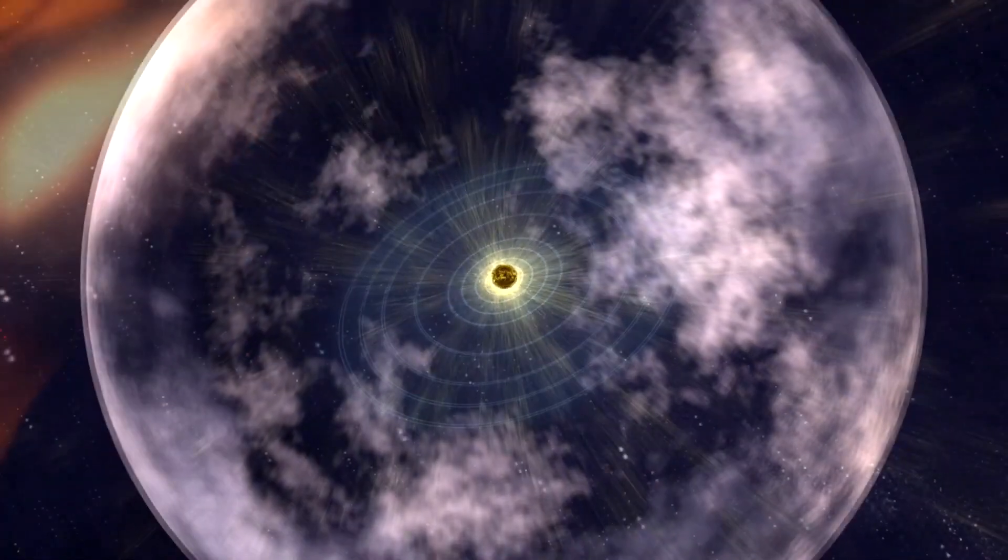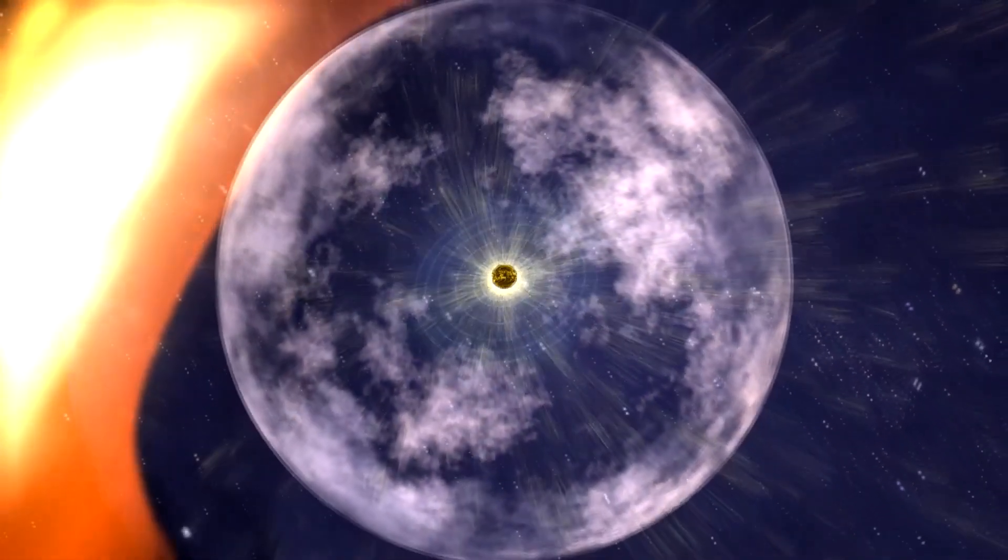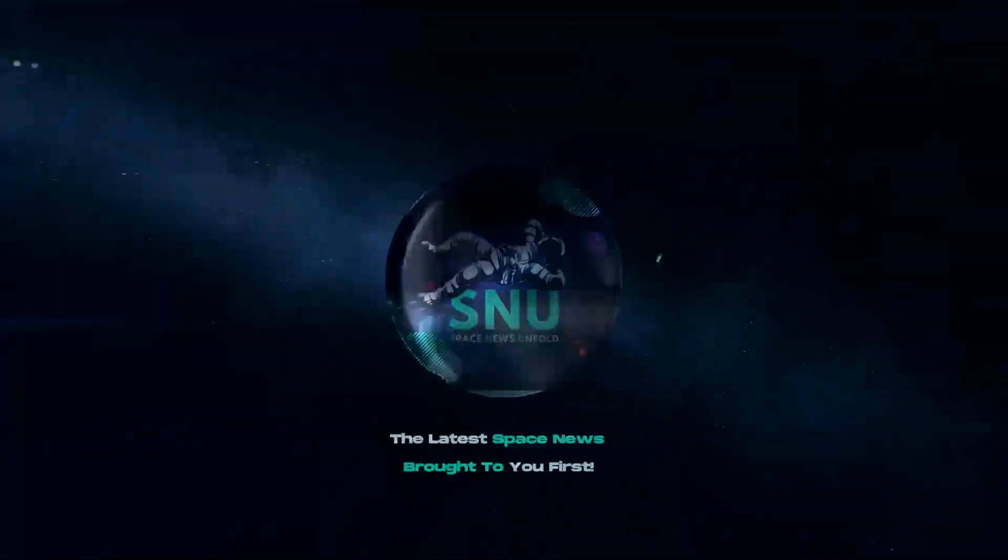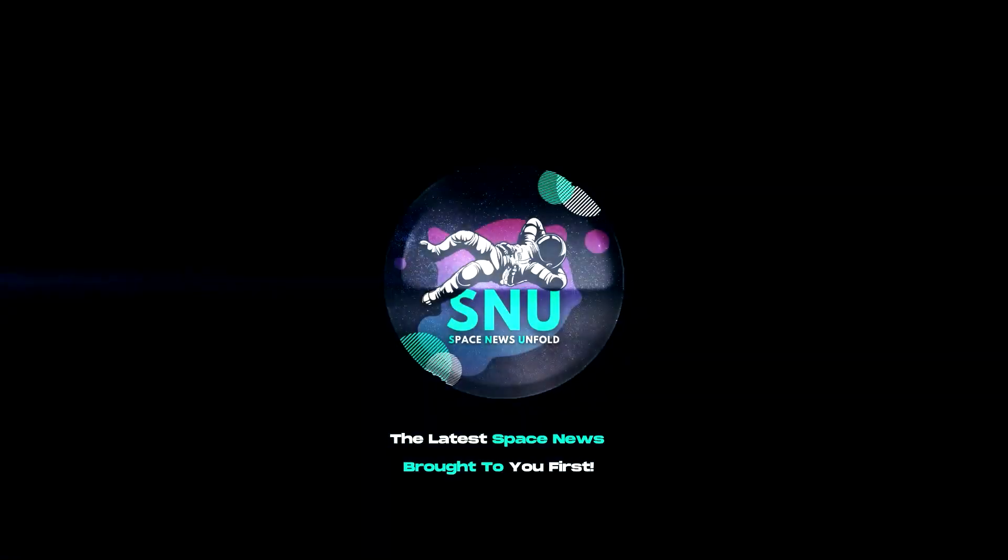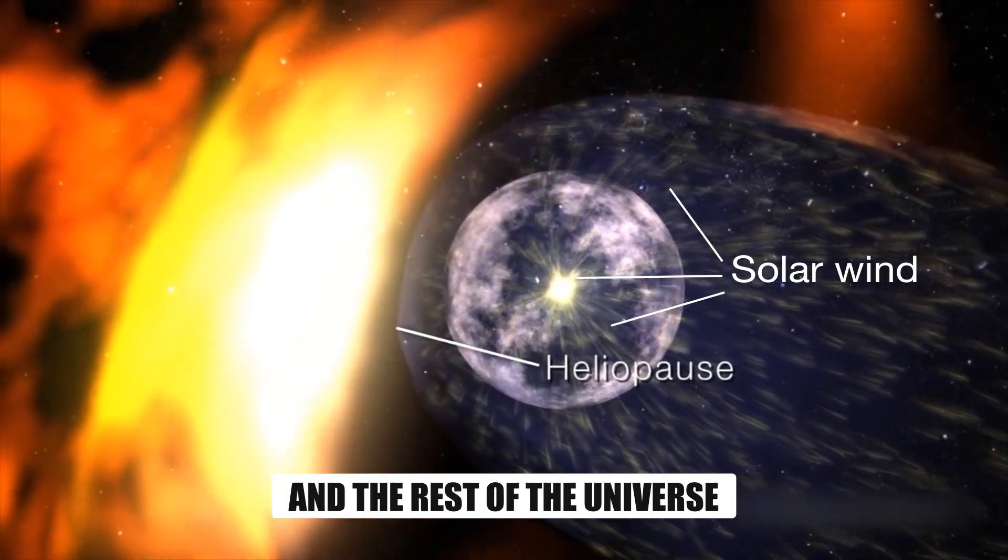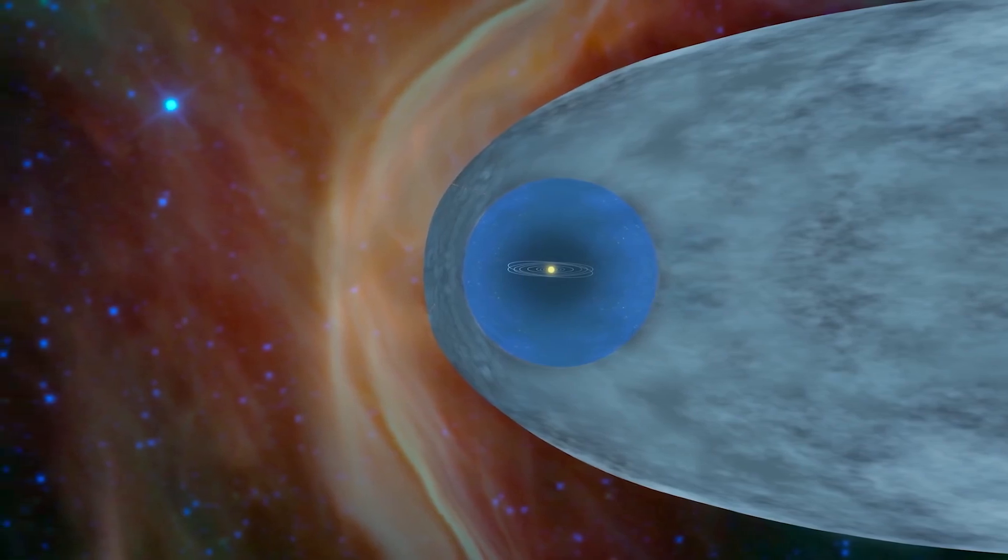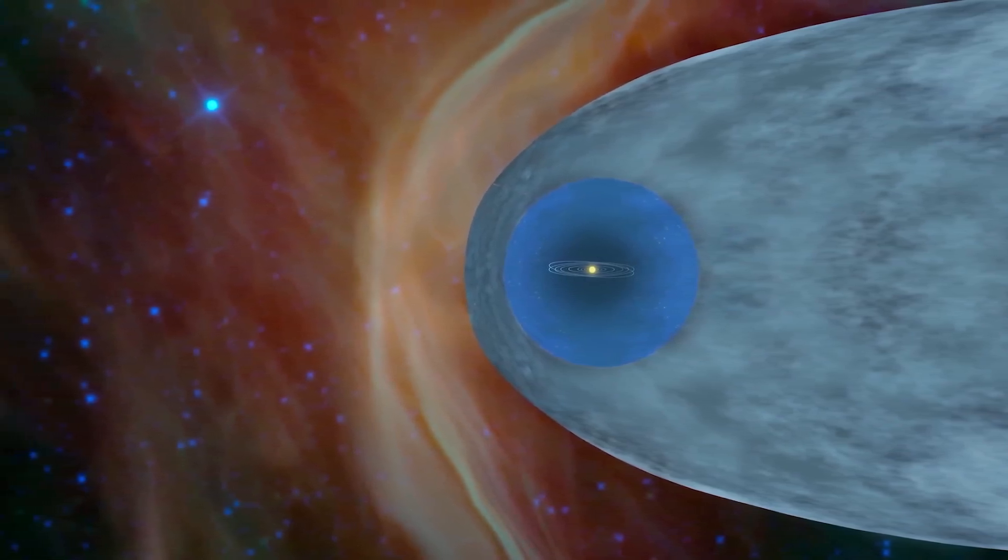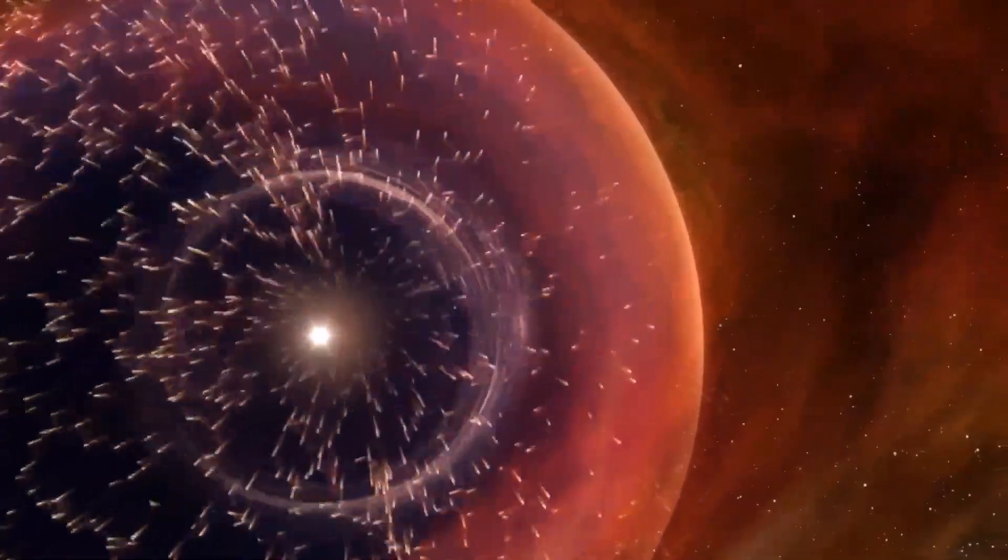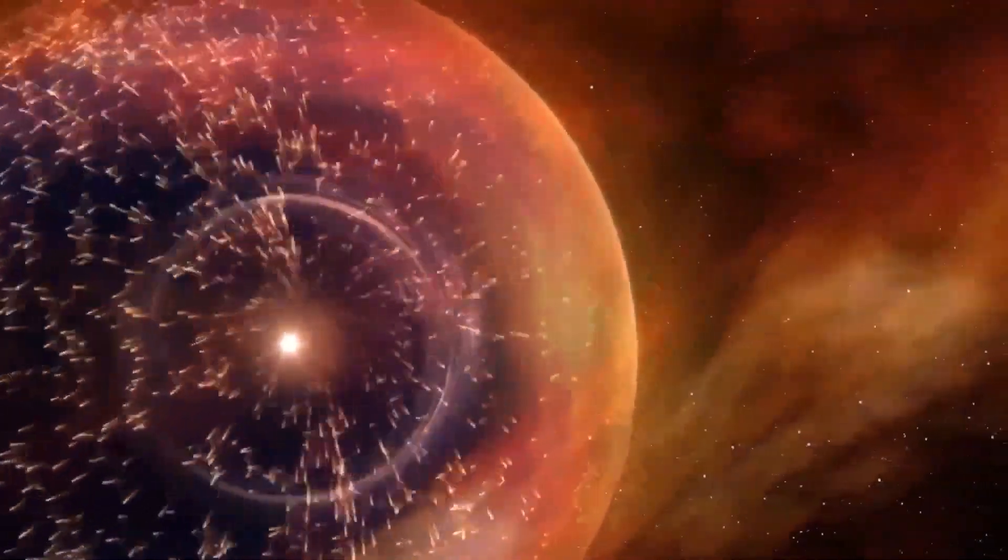The heliopause is the boundary between the solar system and the interstellar medium. Shifts in the heliopause are of particular interest to researchers. But our current heliopause models don't account for certain terrifying changes that new research suggests.